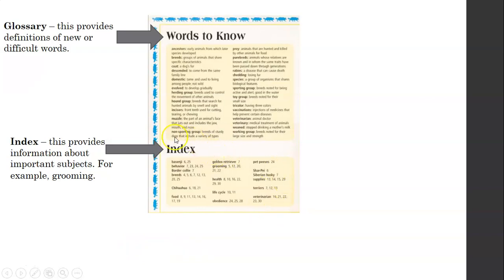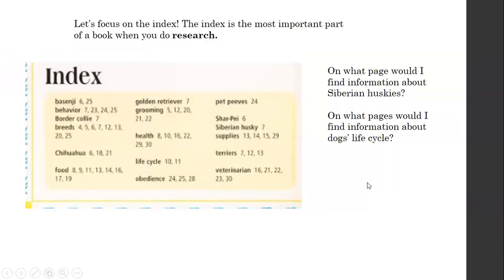Well guys, here's another important part of the book. This is called the Index. The Index provides information about important subjects. For example, we could look up grooming. Grooming. We would find information about grooming dogs on page 5, 12, 20, 21, 22. And that's what these numbers are. They are page numbers. We could find information about Siberian Huskies on page 7, it looks like. And Chihuahuas, we could find information about Chihuahuas on pages 6, 18, and 21.